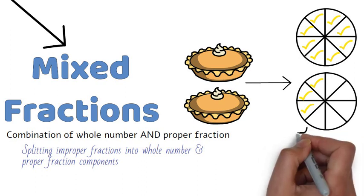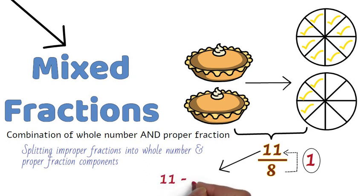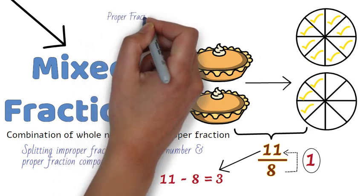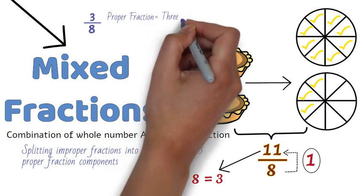The fraction that we ended up with was 11 eighths. 8 goes into 11 one time, so the whole number component of the mixed fraction is 1. 11 minus 8 is equal to 3. Therefore, the proper fraction component is 3 over 8, or 3 eighths.